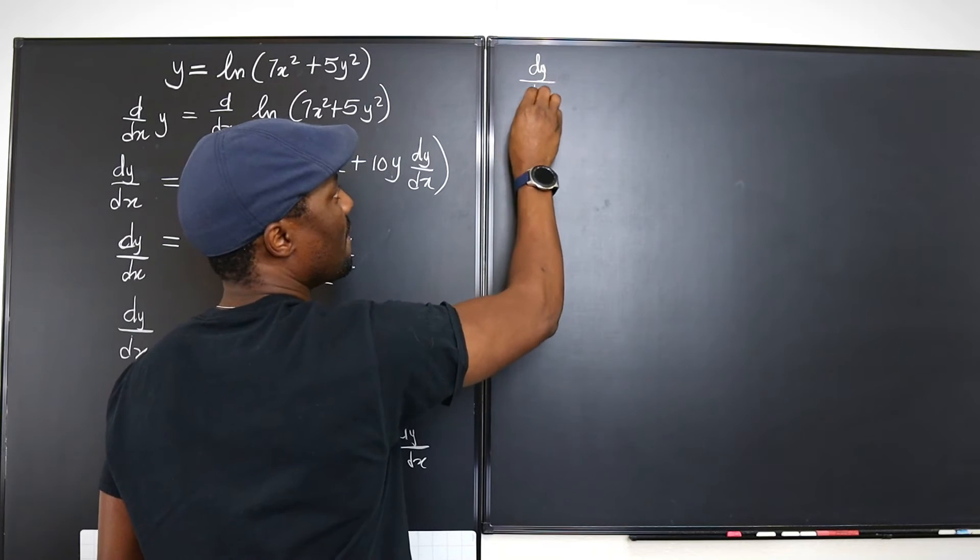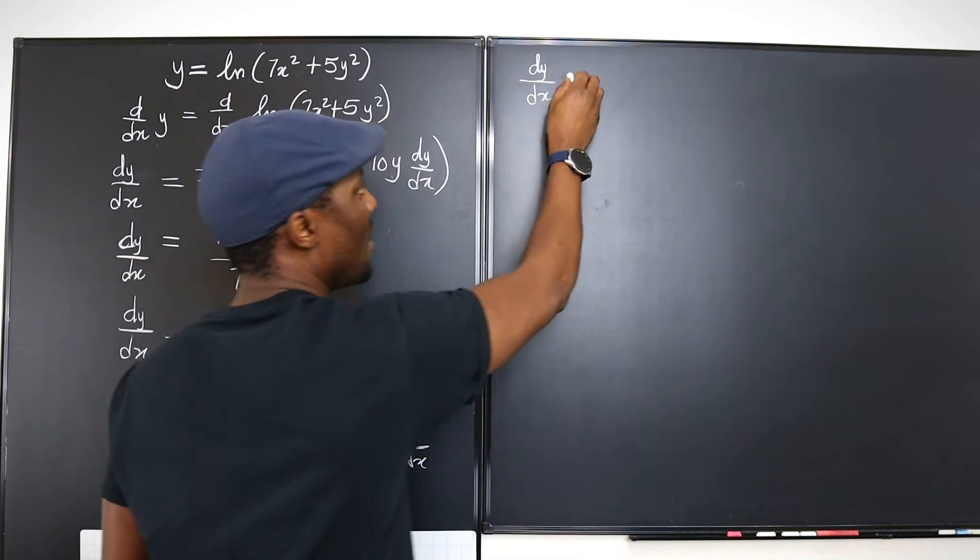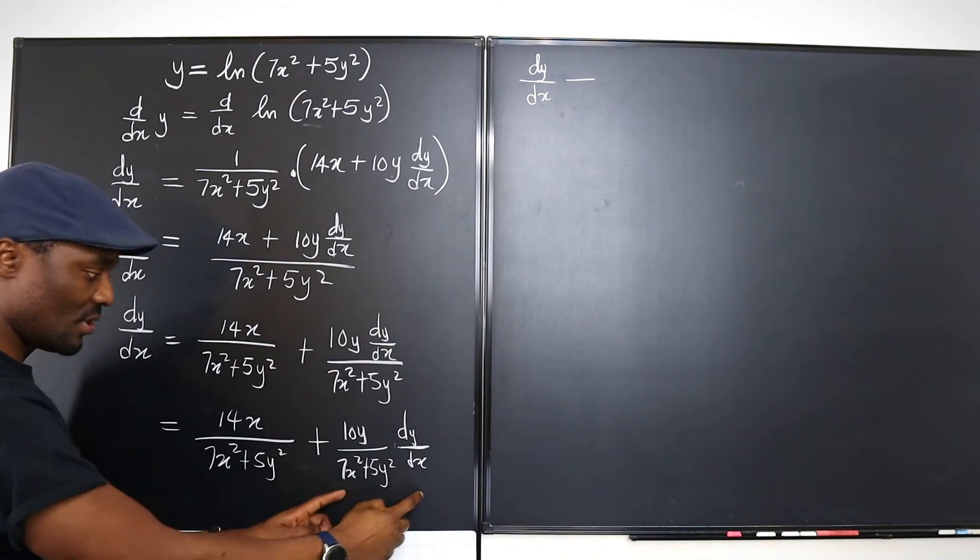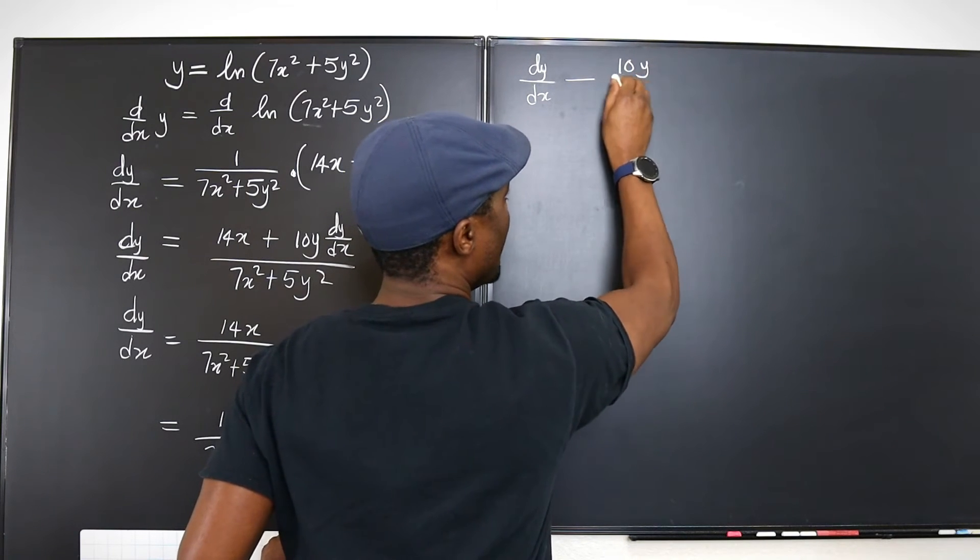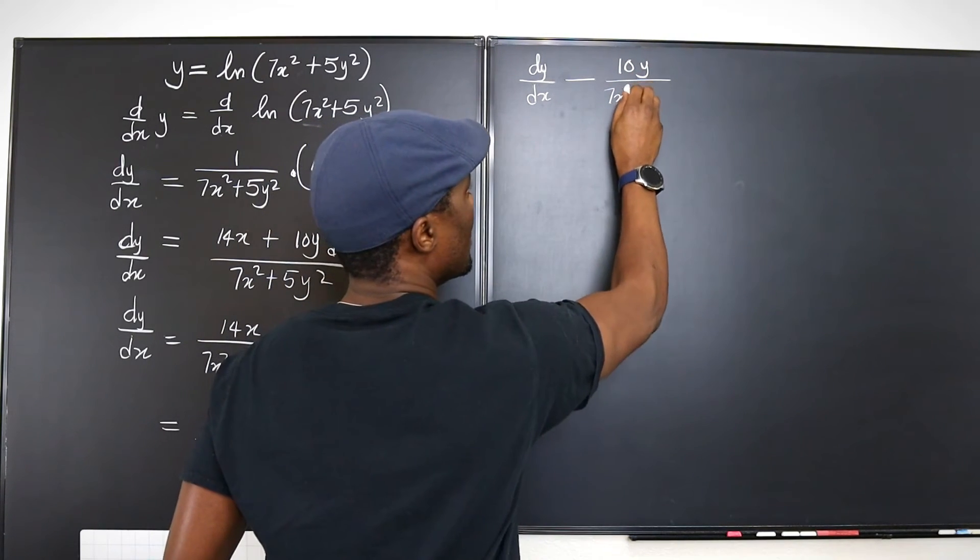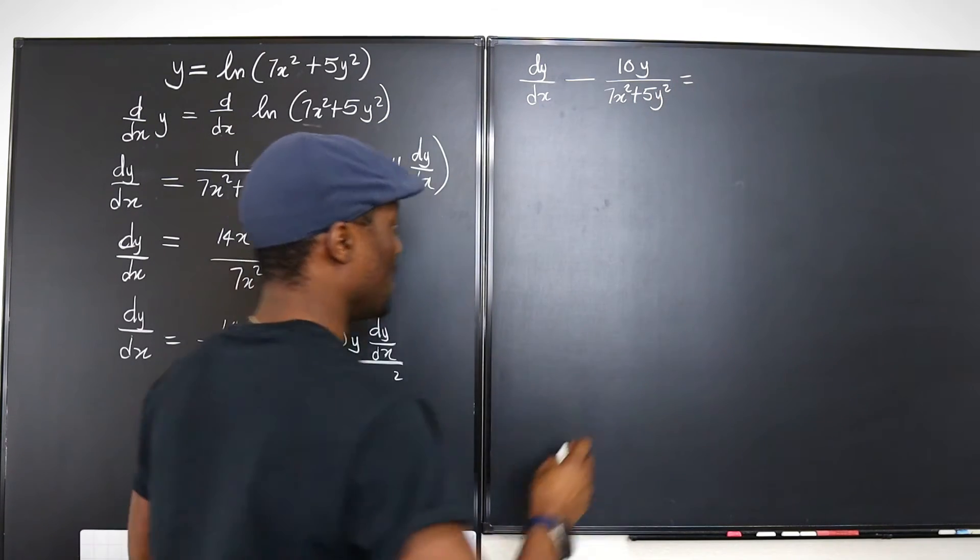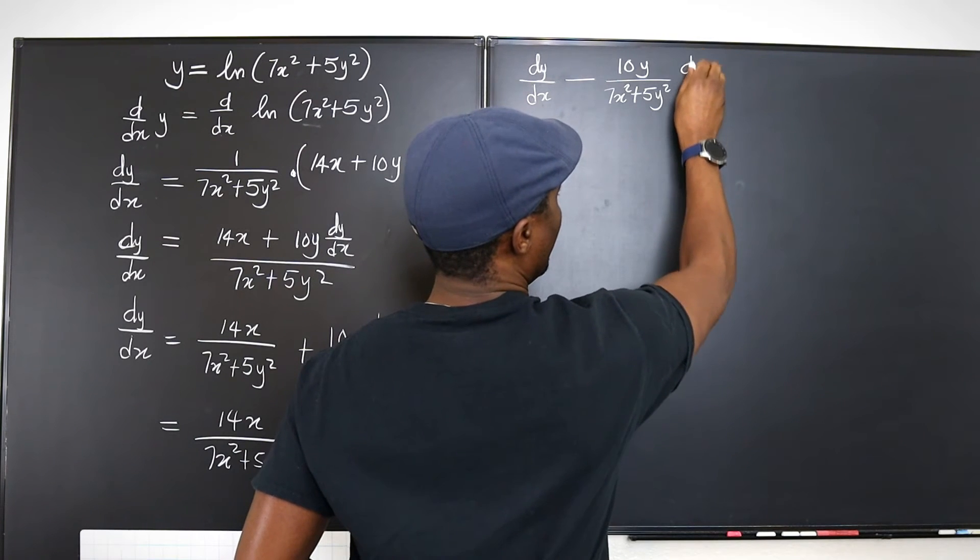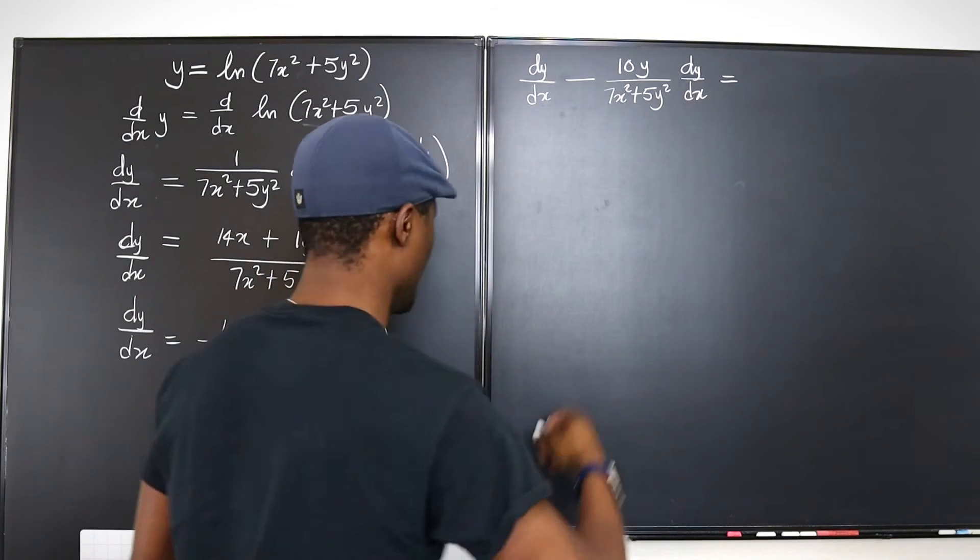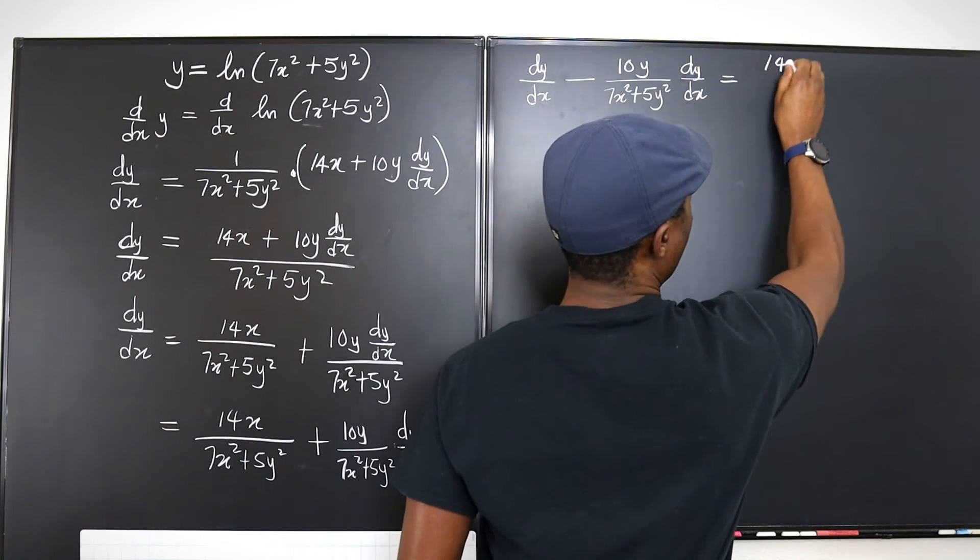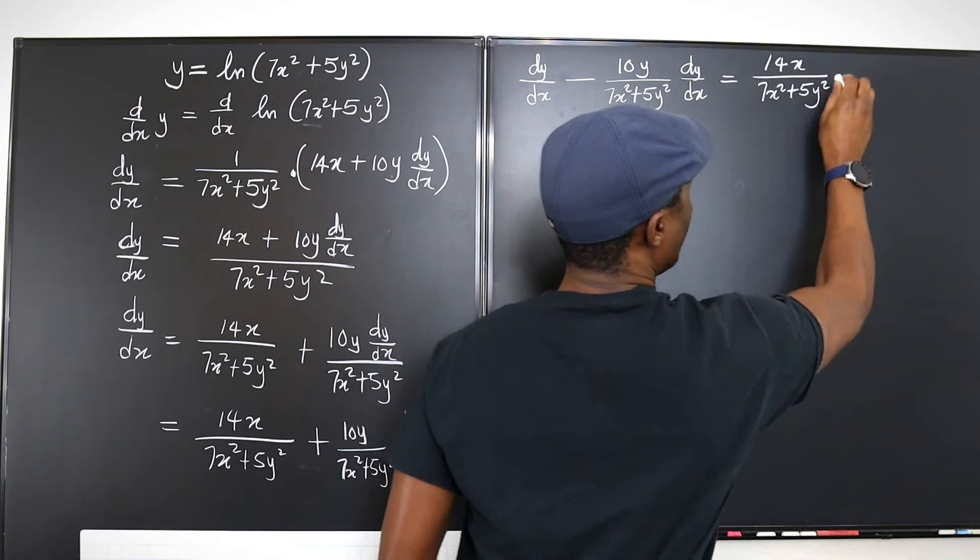So let's progress. Now we have dy/dx, and if you subtract this term, you take it to this side, you're going to have dy/dx minus 10y over (7x² + 5y²) will be equal to what you have here, which is 14x over (7x² + 5y²).